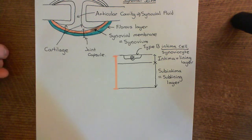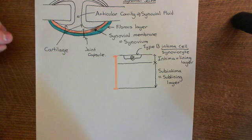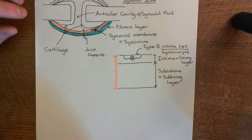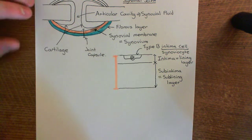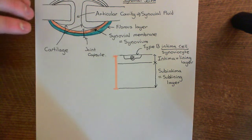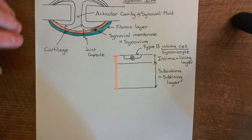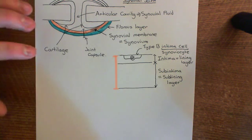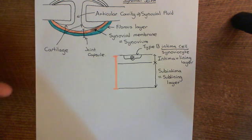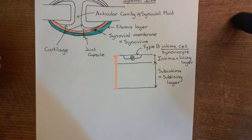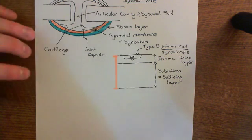Welcome to this next video in which we are discussing drug treatment of rheumatoid arthritis. I apologise for the abrupt ending to the previous video. I was talking about type B intima cells, or type B synoviocytes.